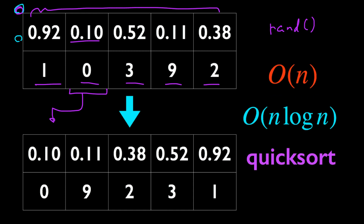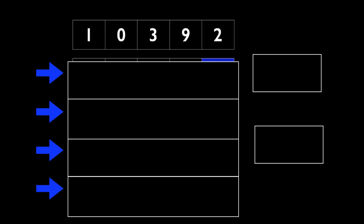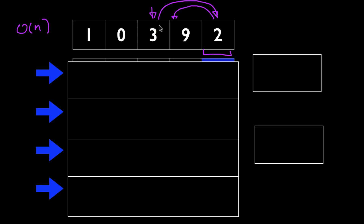So is there a better solution than this? Yes, there is, and here's my O(n) solution. The first thing we're going to ask ourselves is: what should the value be at the last index where 2 is currently? We're going to determine that by picking a random value out of all the values of this array. And we might pick randomly, for example, the number 3, and in that case, we'll swap the number 3 with the number 2 so that the number 3 will go to the last index.